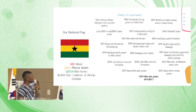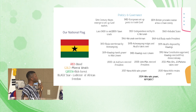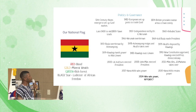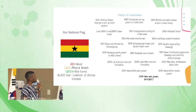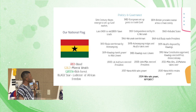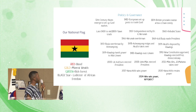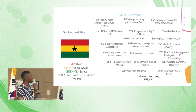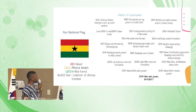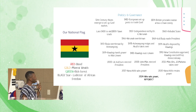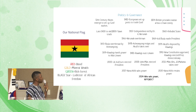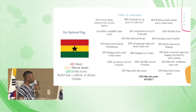In 1978, Acheampong resigned and a successor took over. In 1979, Acheampong was deposed by Rawlings. Also in 1979, Rawlings handed power to Hilla Limann. Then in 1992, Ghana started its democratic era.